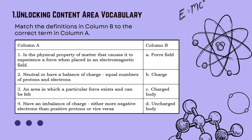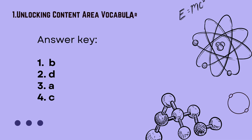The correct answers: Number 1 — the physical property of matter that causes it to experience a force when placed in an electromagnetic field — is 'charge.' Number 2 — neutral or balanced charge — is 'uncharged body.' Number 3 — an area where a particular force exists and can be felt — is 'force field.' Number 4 — having an imbalance of charge — is 'charged body.'